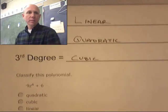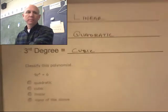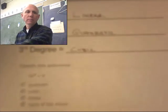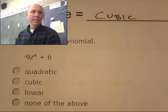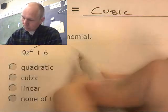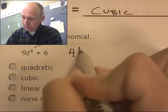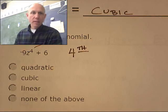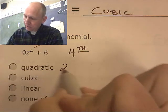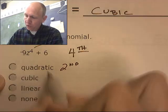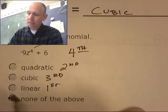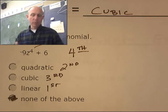Here's our first one. Let's take a look at this. What degree is this? What's a fourth degree? Well, a quadratic is a second degree. It's not that one. A cubic is a third degree. It's not that one. A linear is a first degree. This is a none of the above. There's no magical name for a fourth degree.